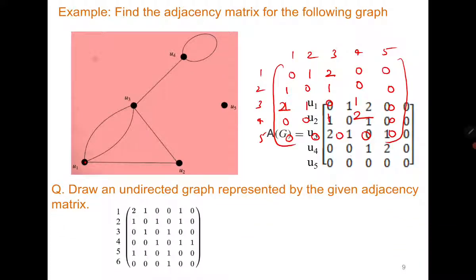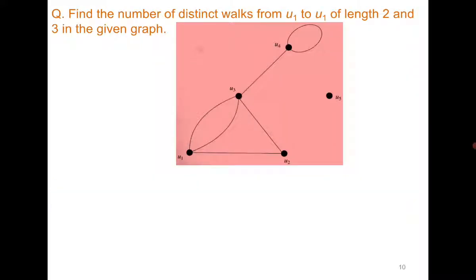Given a matrix, try to draw the corresponding graph — you will find the required graph for the given adjacency matrix. Next: compute the number of distinct walks from u1 to u1 of length 2 and length 3 in the given graph. For a walk of length 2 from u1 back to u1, one approach is to go to all adjacent vertices and return: go from u1 to u2 and come back, or go from u1 to u3 and come back via either of the two edges.